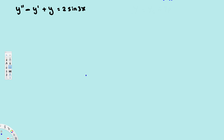In this video we are going to see how to find the general solution of a non-homogeneous differential equation using the superposition technique. In superposition technique, we find both the complementary solution and the particular solution. For the complementary solution, there are three cases: equal real roots, distinct real roots, and complex roots — each with its own pattern.